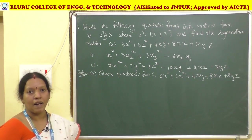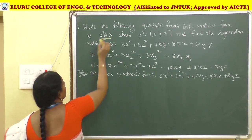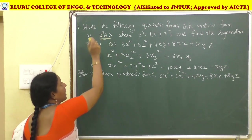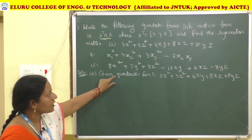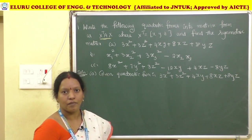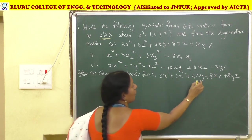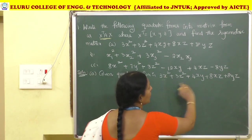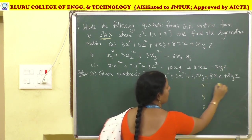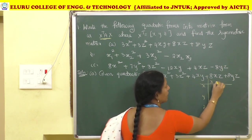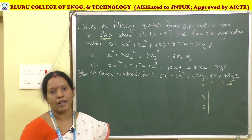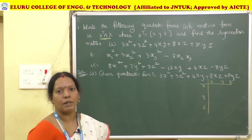We need to find the matrix form. There are three variables X, Y, Z, so we write a 3×3 matrix. We write the coefficients: the X² coefficient is 3, placed at position (1,1). For the XY term, the coefficient is 4, so 4 divided by 2 gives 2, placed at the XY and YX positions.